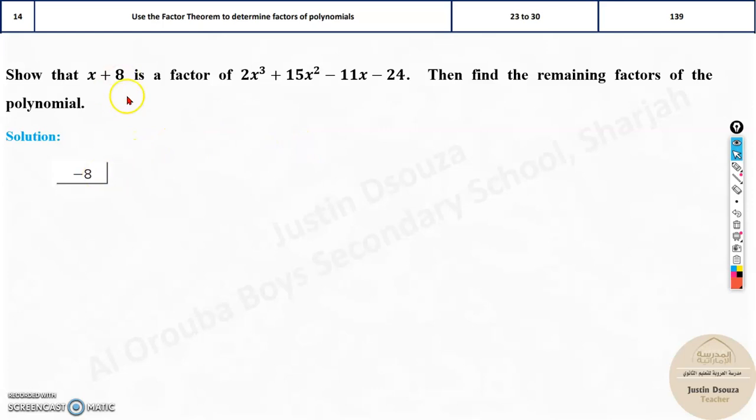Now here, you have this particular factor x + 8, which is supposed to be a factor of this. Now what does factor mean? Imagine the number 42. Now 42, 6 times 7 is 42. So I know 6 into 7 is 42, that means both 6 and 7 are factors of 42. When I multiply them, I'm going to get 42.